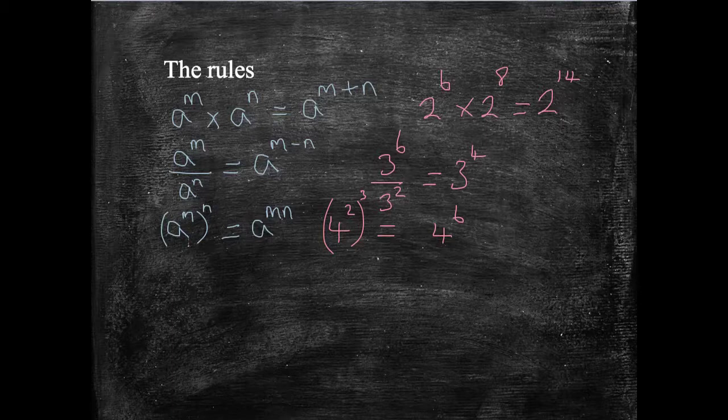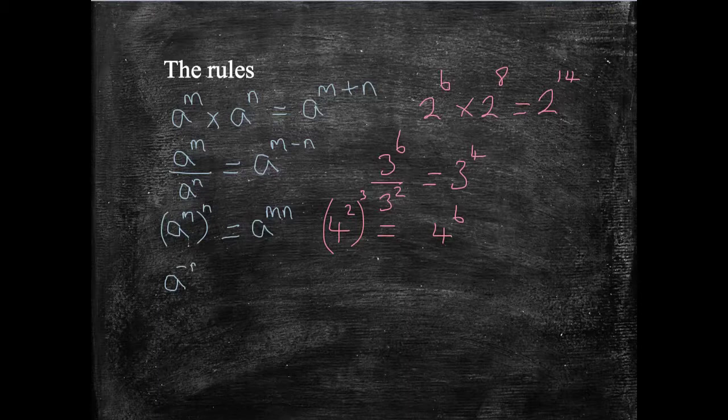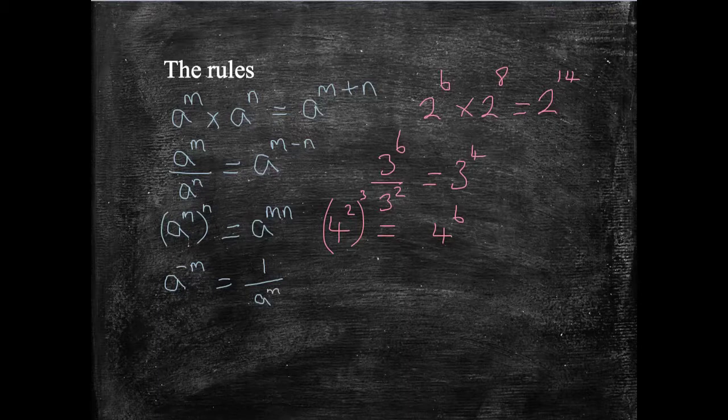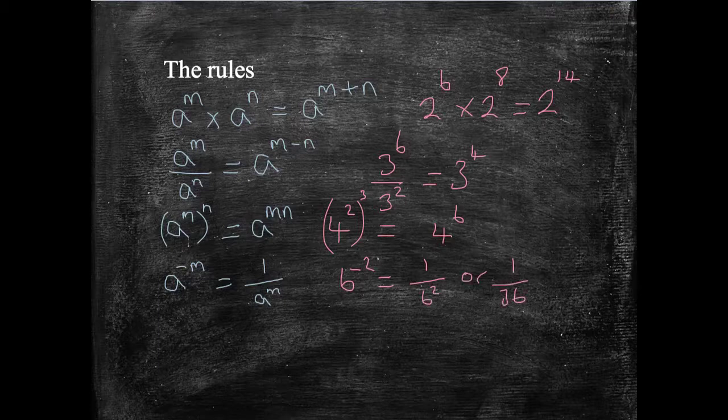Then I've got one or two fractional and negative ones. And this is where it starts to become an A, an A star type topic. So let's say I've got A to the power minus M. This becomes 1 over A to the M. So 6 to the minus 2 is the same as 1 over 6 squared, or 1 over 36, if we're evaluating it.